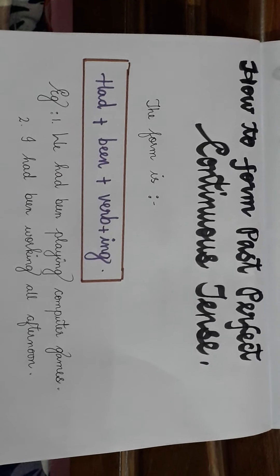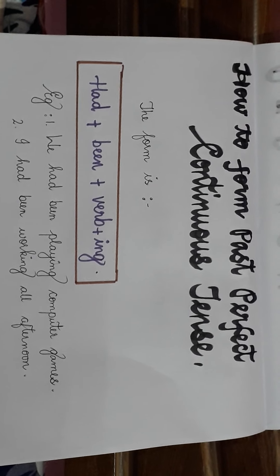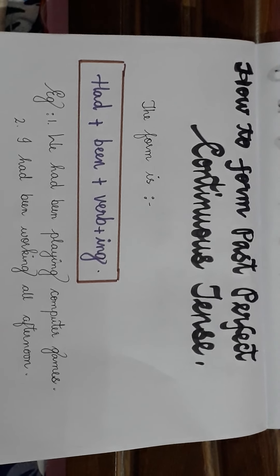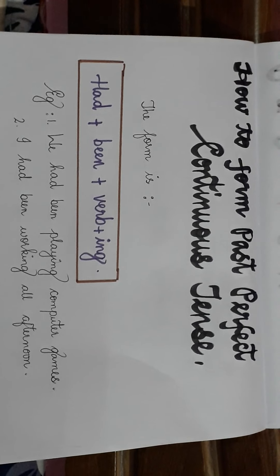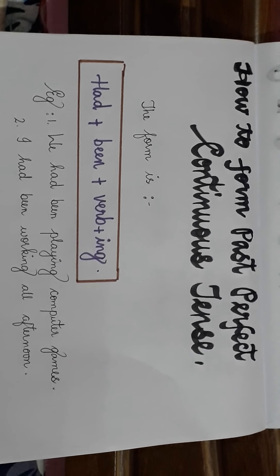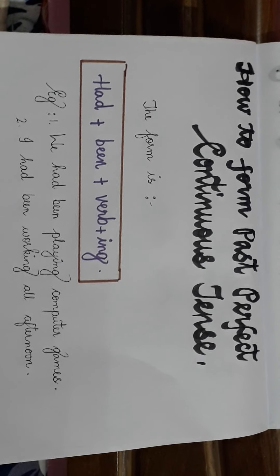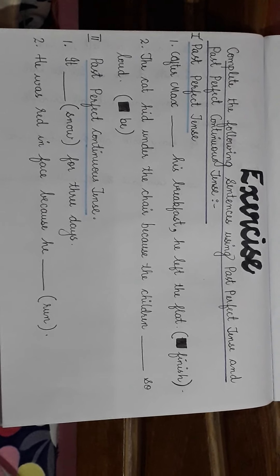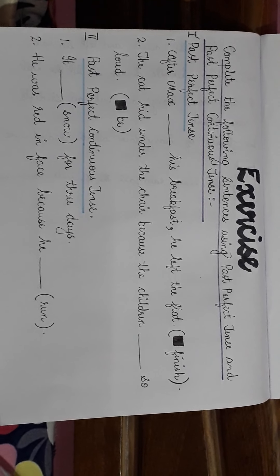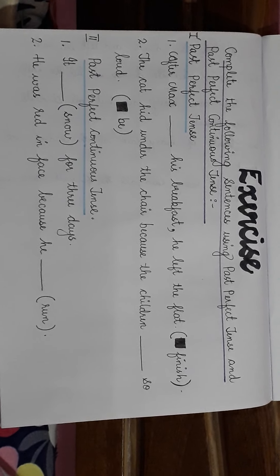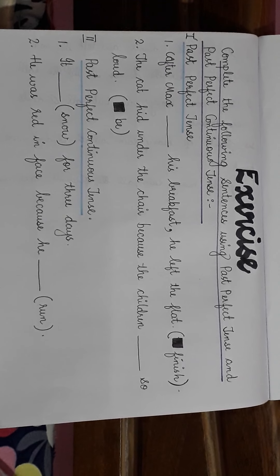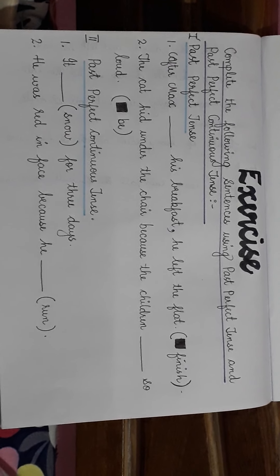For past perfect continuous tense, the form will be: Subject + had + been + verb + ing. With this we wind up our session. Now take down the questions as your home assignment and answer them. Thank you.